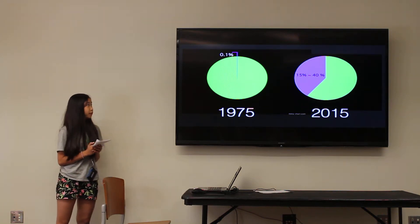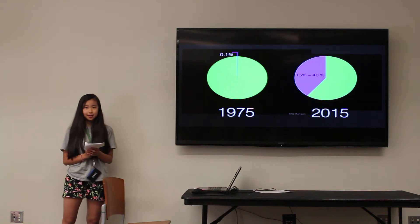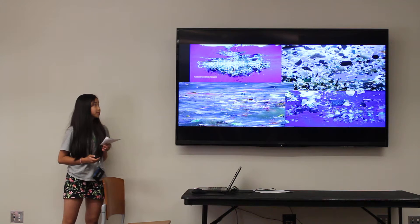Out of all plastics, 15 to 40% end up in our oceans, very drastic compared to the 1975 study that concluded that then it was 0.1%. Most of them end up like this.